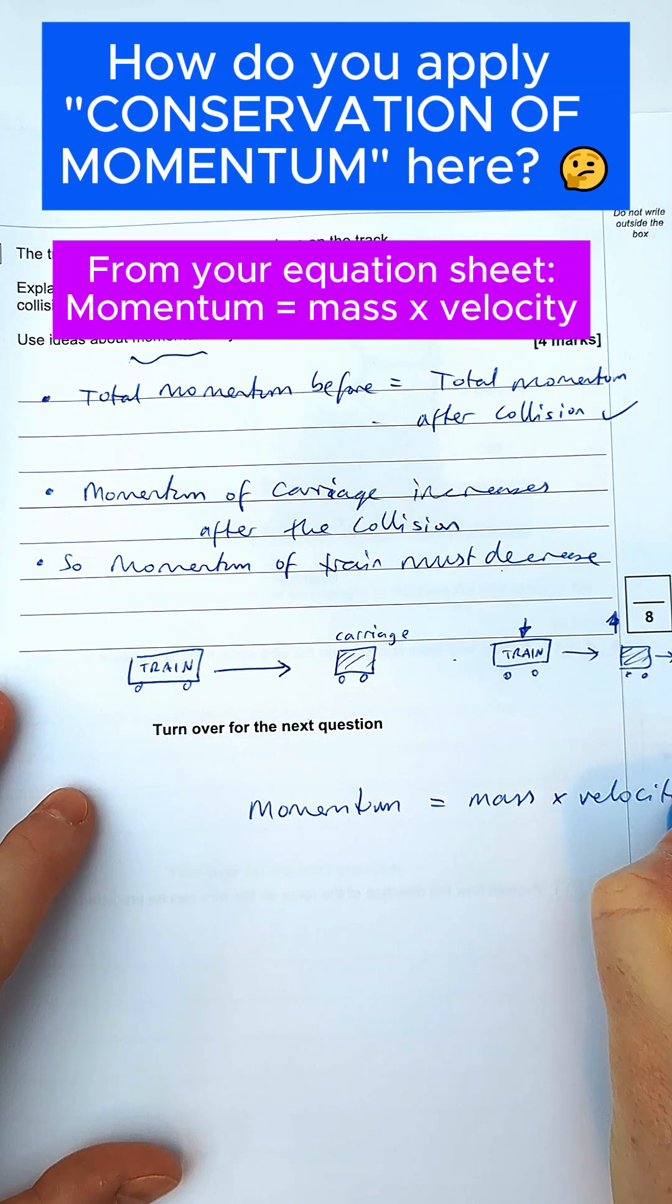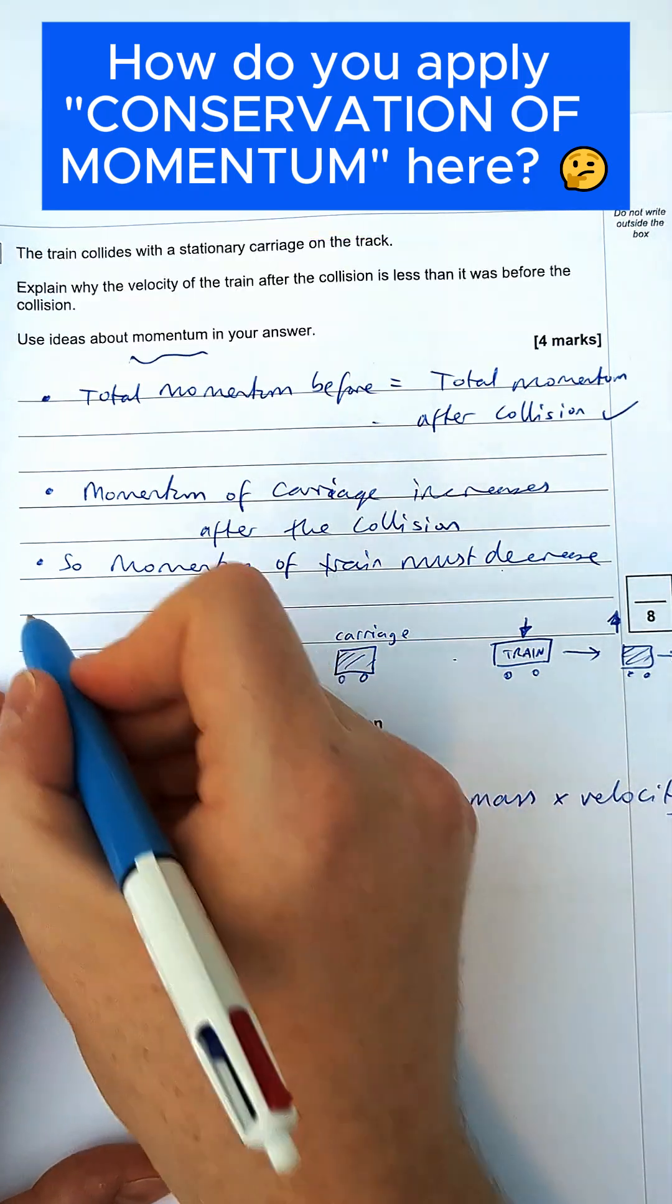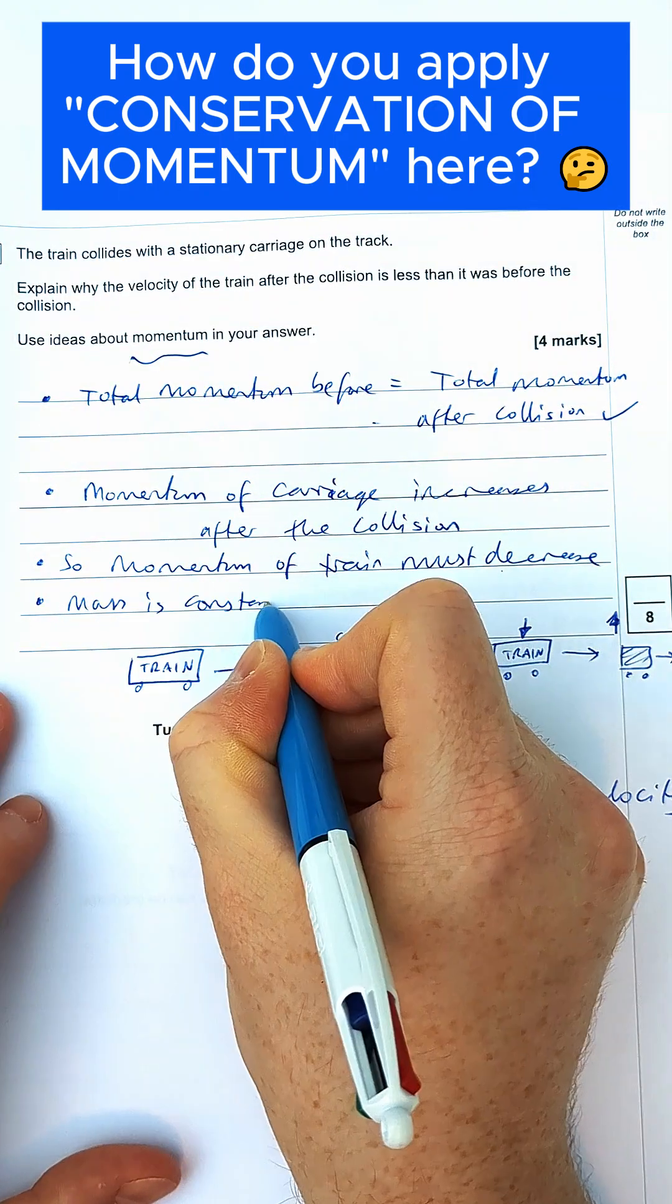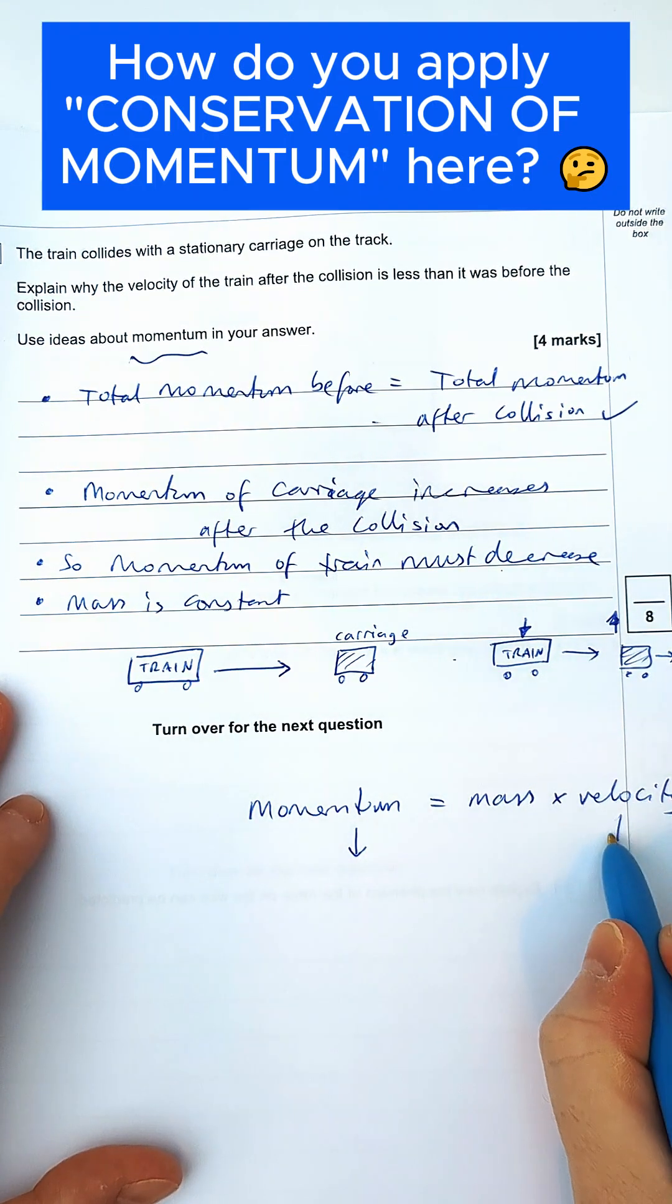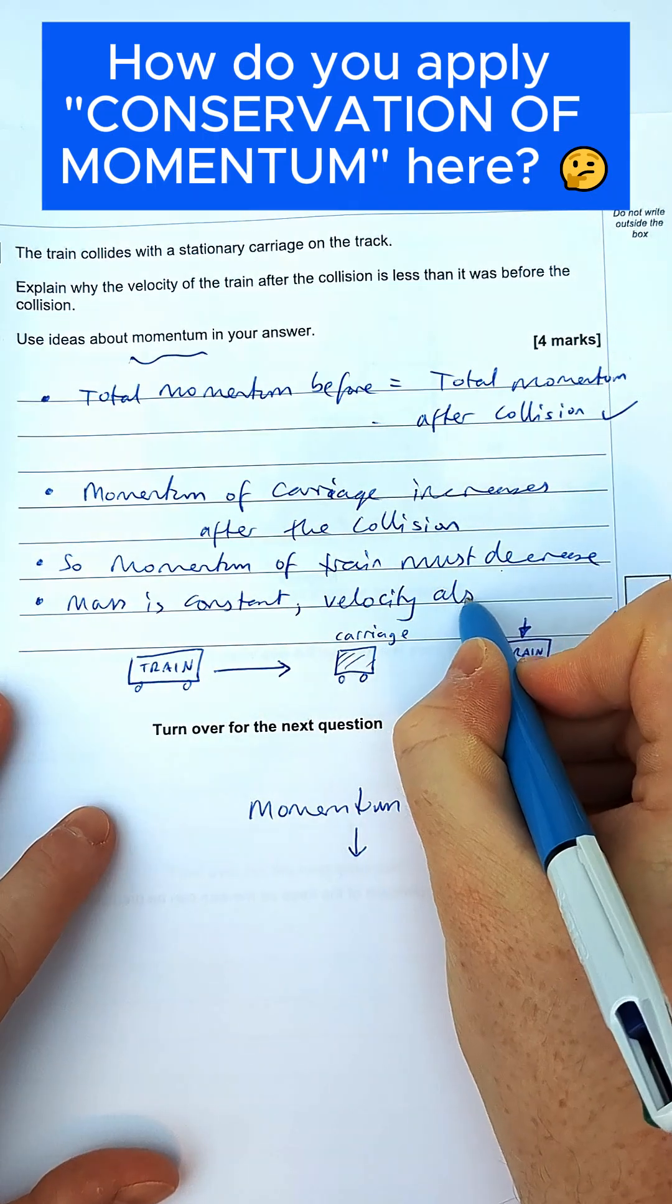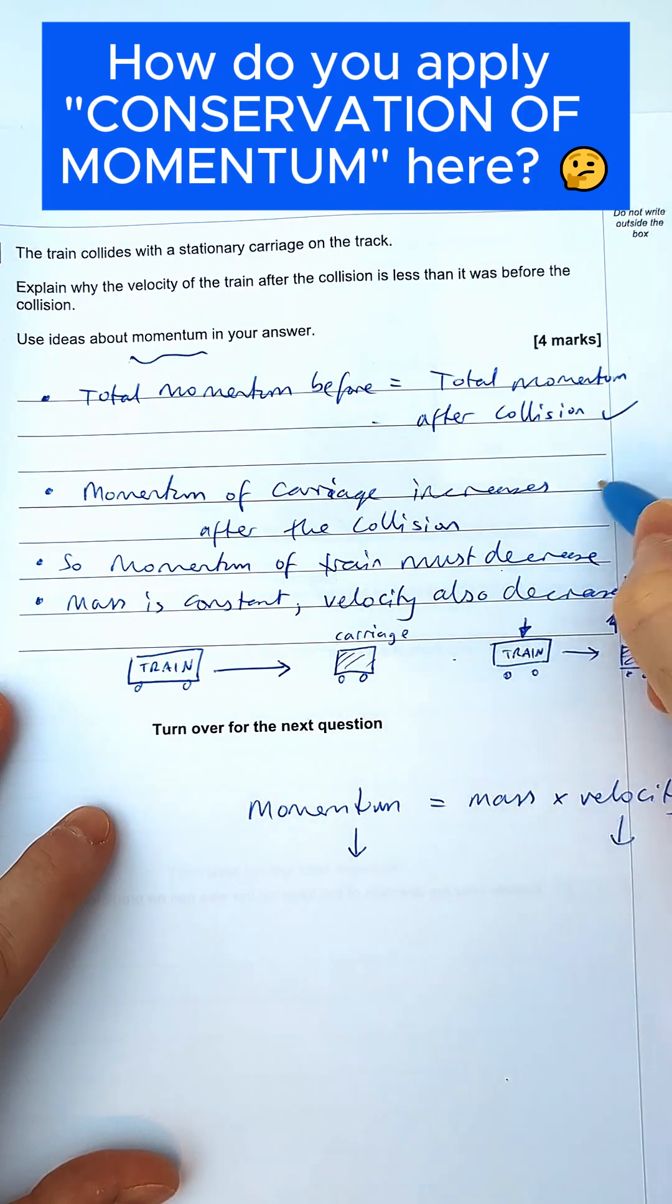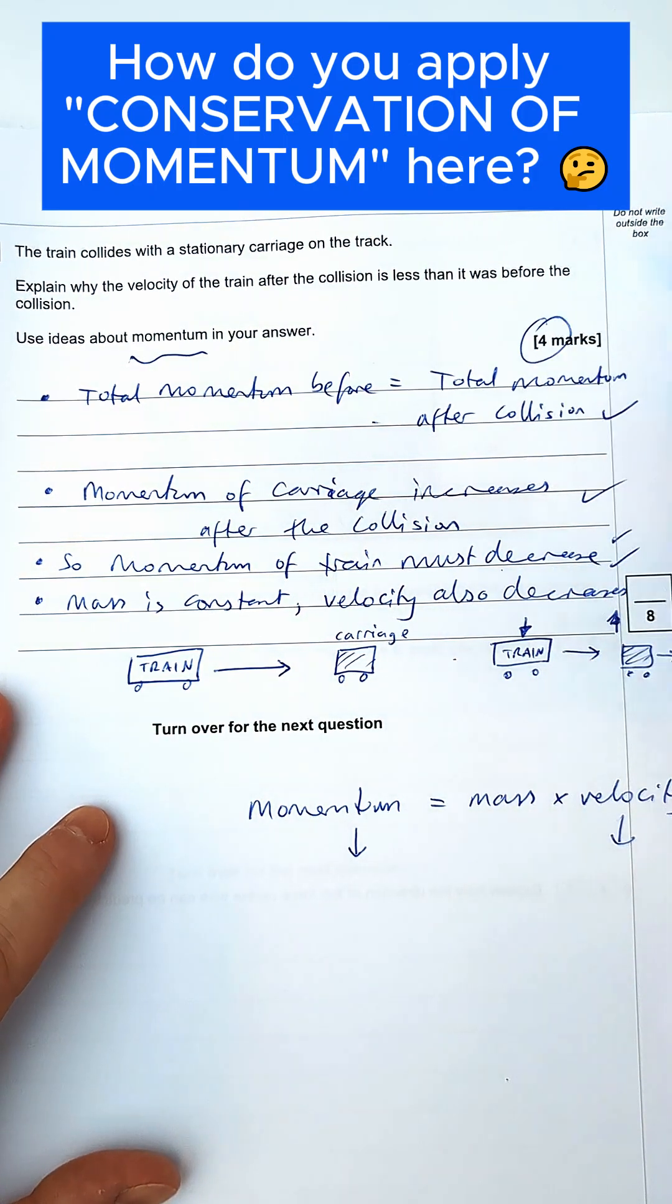We know the mass of the train doesn't change. So if mass is constant, then from this equation, if the momentum goes down, the velocity must also go down. So velocity also decreases. And that's enough for our four marks.